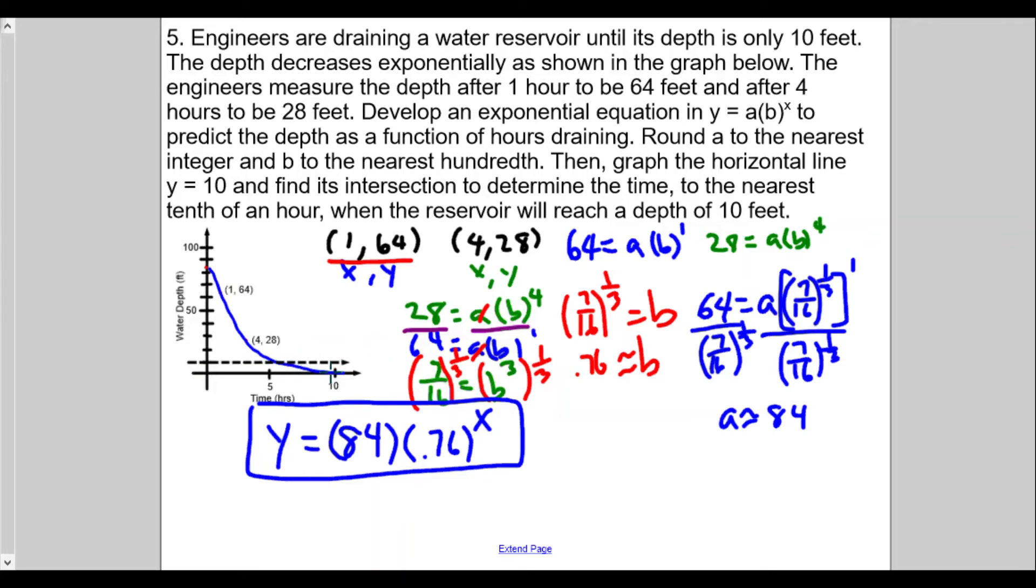According to my graph, it looks a little bit after 5, although I think if we go back to the original it might be a little bit different. It says here find the intersection to determine the time to the nearest tenth of an hour. Here's what we're going to do: we're going to enter this into our graphing calculator—the 84 times 0.76 raised to the x power, and 10.